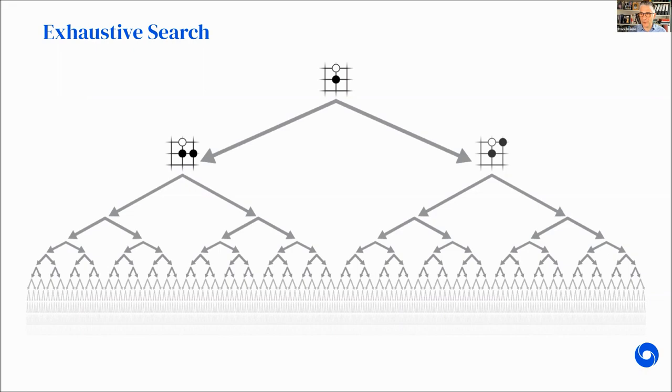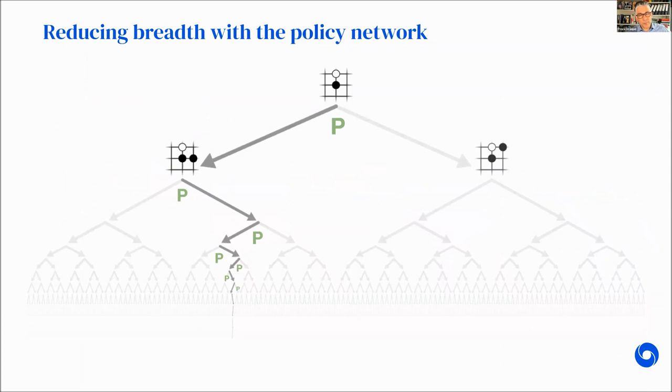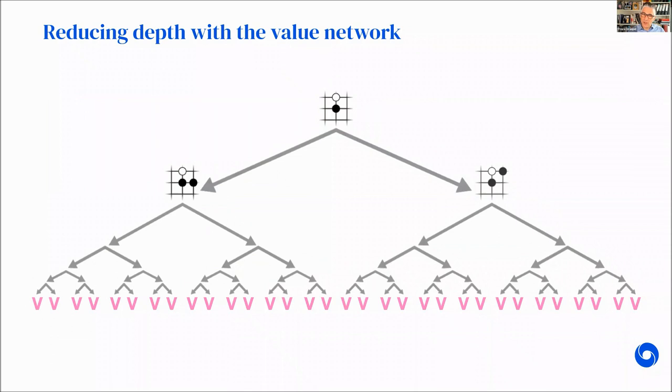Here's a cartoon of the search tree in Go. The policy network allows us to reduce the fan-out because it tells us among the 200 different moves which ones are promising. The search focuses on ones that look promising. The search is still very deep and that's where the value network comes in. In traditional Monte Carlo tree search, you'd go all the way to the end of the game. The value network determines this much earlier and cuts down the search. In chess programs, this would be a hand-designed evaluation function, but in our setting, it's a learned function.